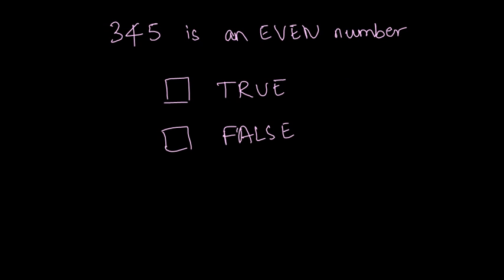So what is the answer to this question? Is it true or false? Let's just divide 345 by 2. We are dividing it by 2. 2 ones are 2, so the remainder is 1. 4 comes down.